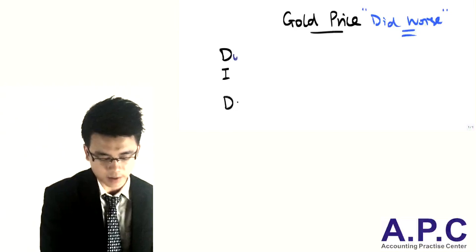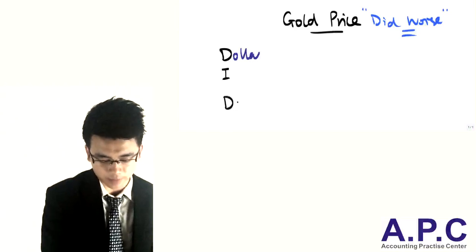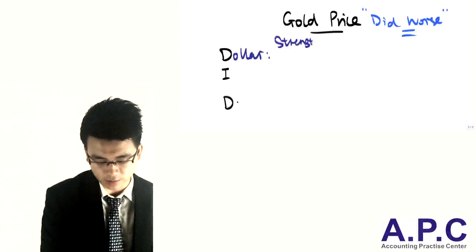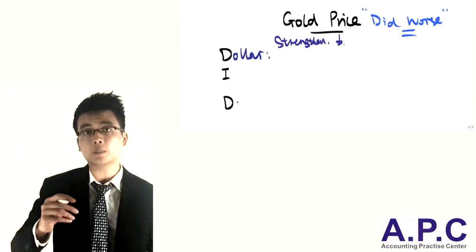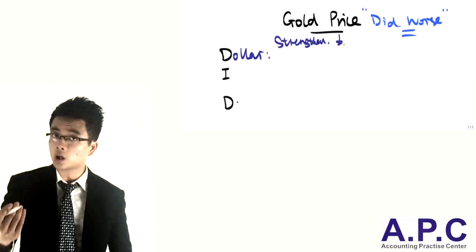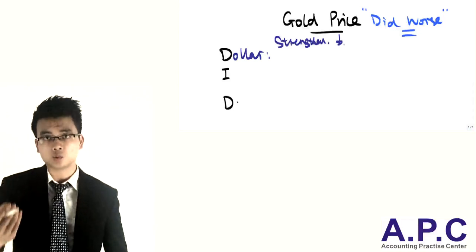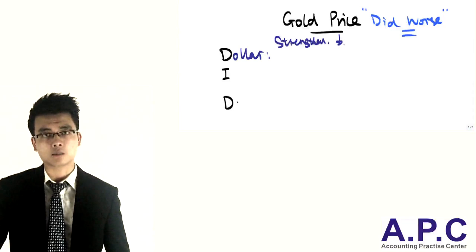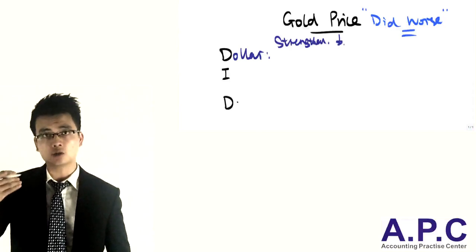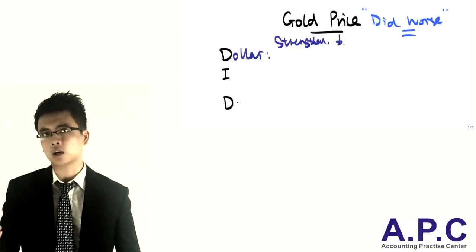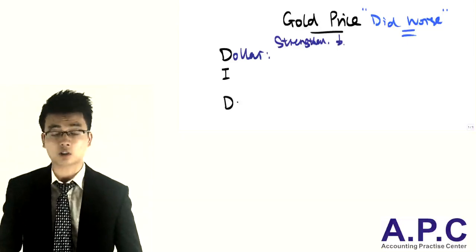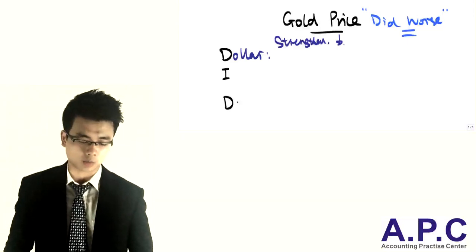Firstly, D is for the dollar. As the dollar strengthens, the price of gold will fall. It's simply because you can hold the dollar rather than invest your money into gold, because the purchasing power of the dollar is really good. So they're going to hold it, and hence the price of gold will fall.